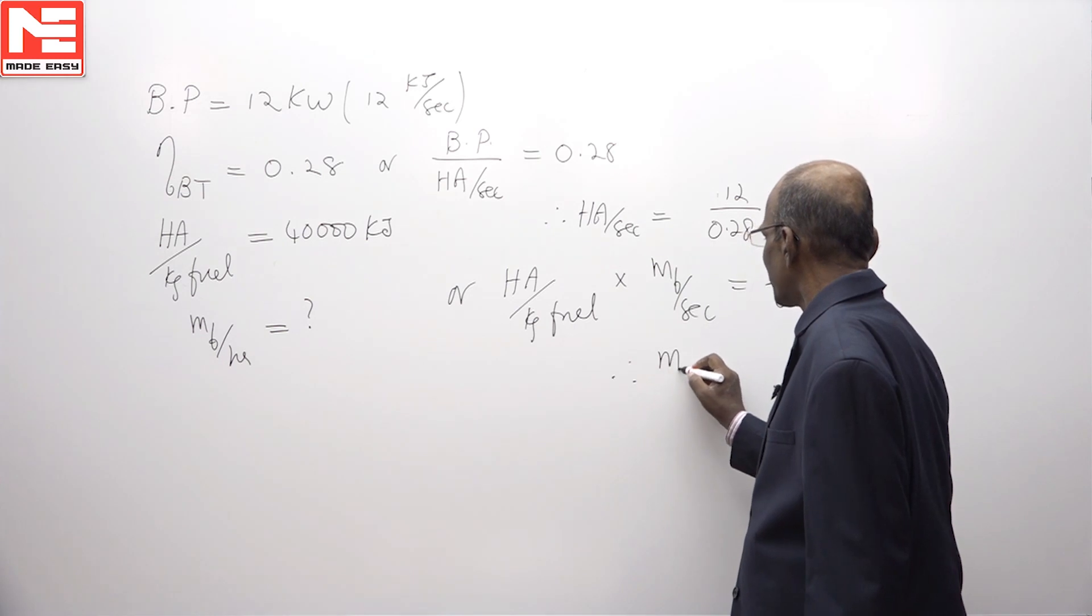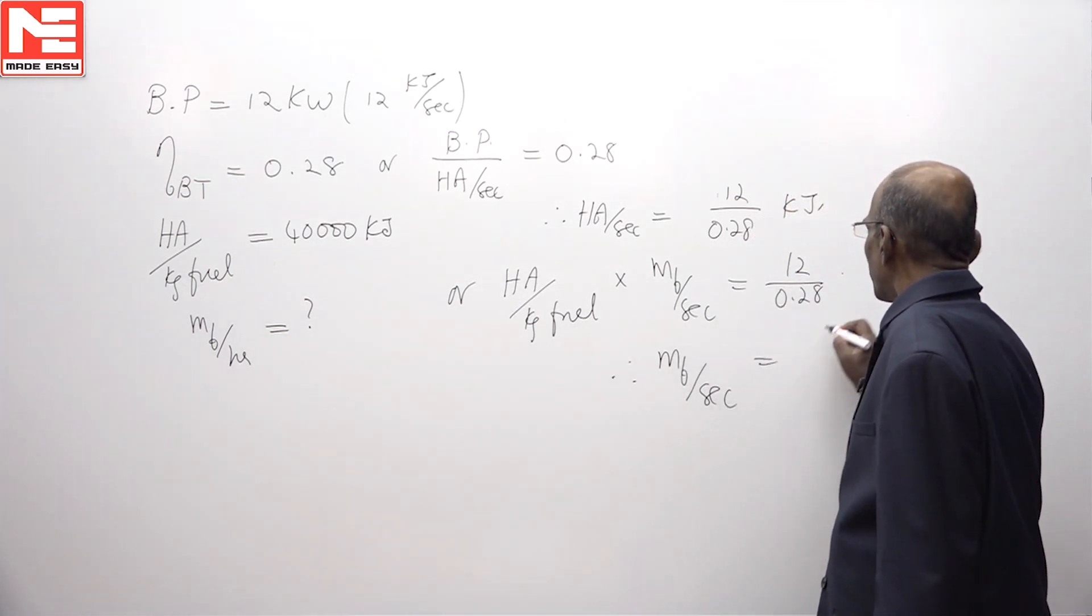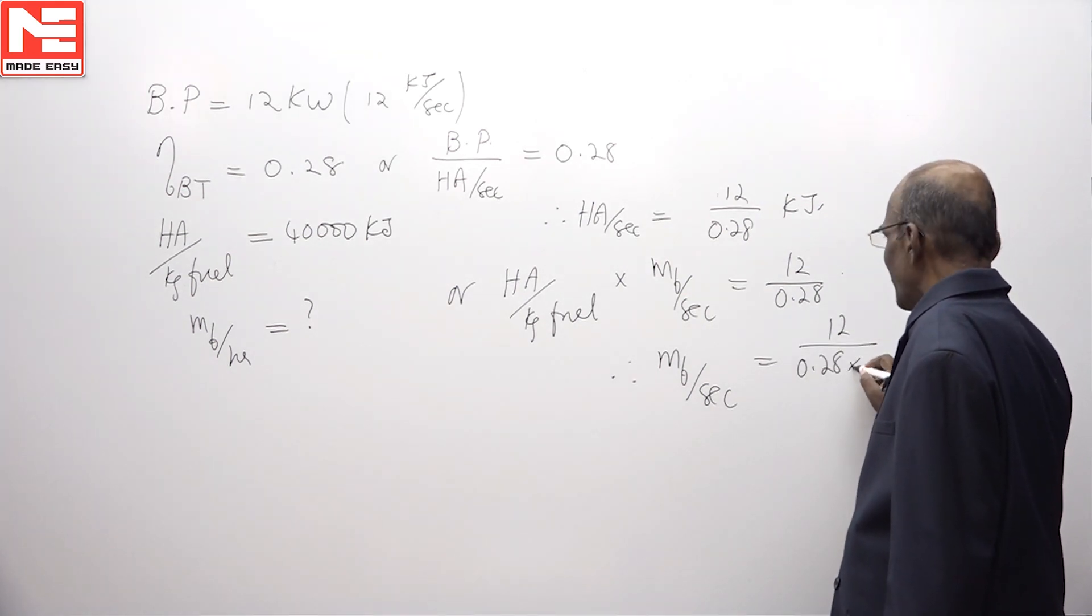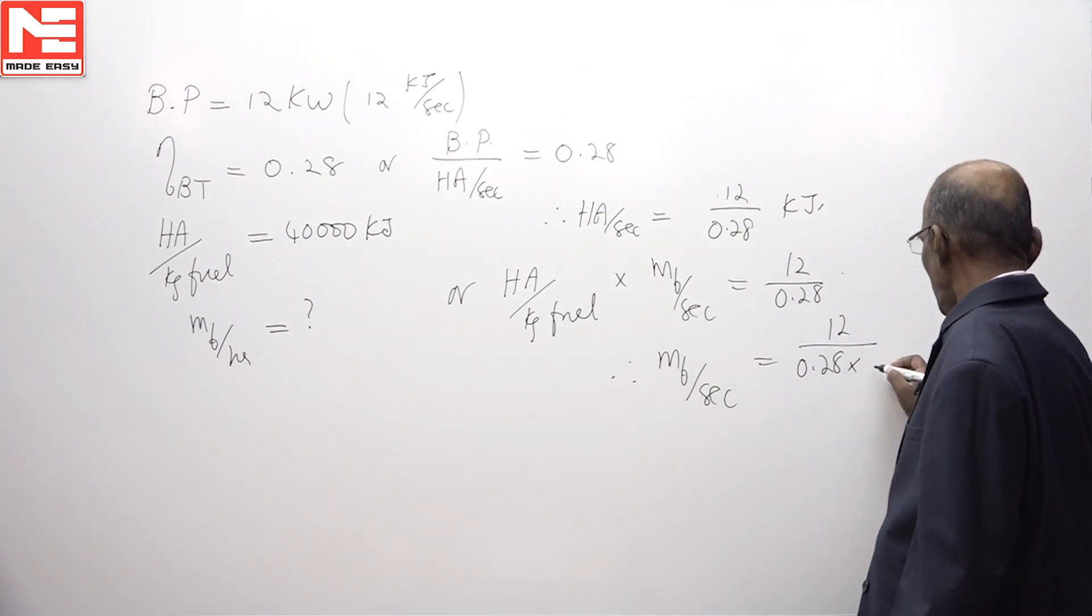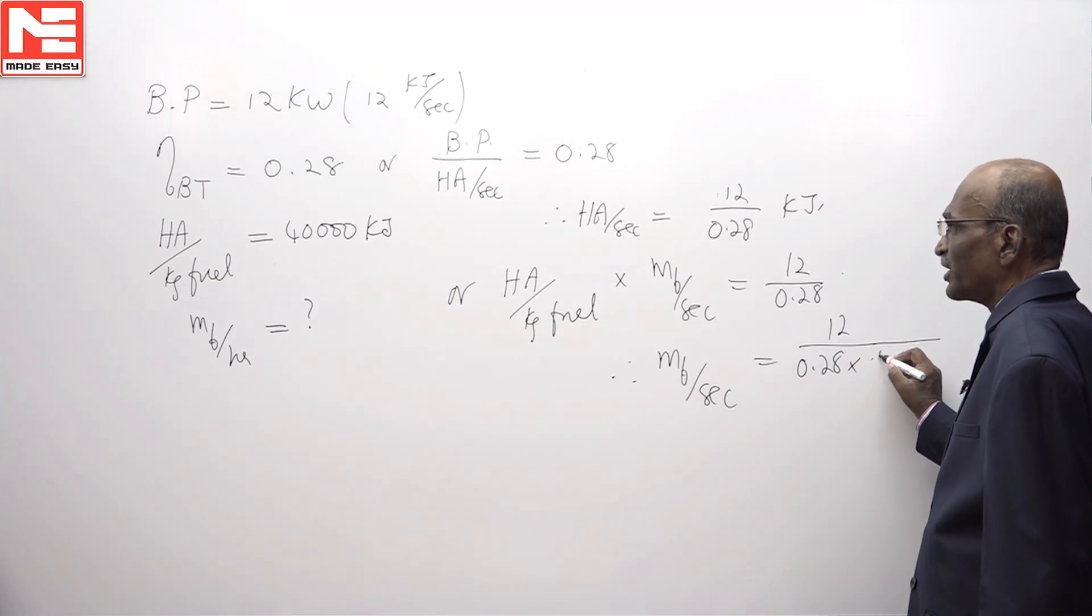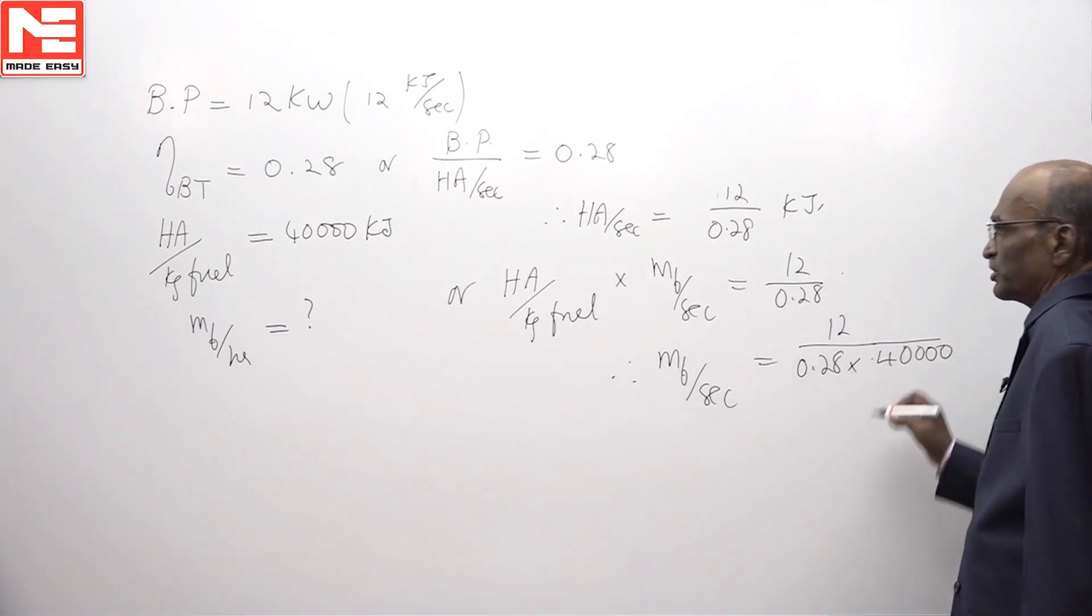The mass of fuel per second from this equation will be equal to 12 by 0.28. The heat added per kg fuel, which is also the calorific value when brought to this side, will be in the denominator and is given by 40,000 kilojoules.